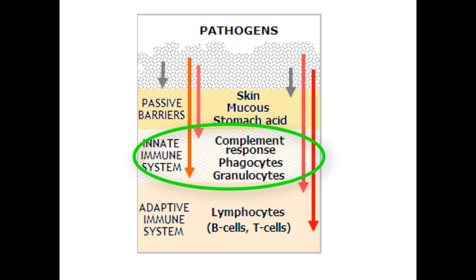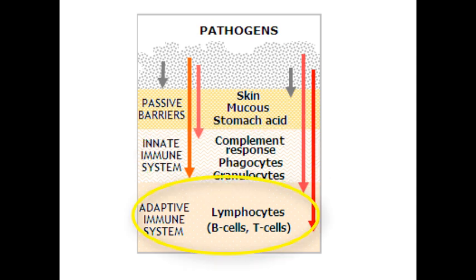Granulocytes are so named because they have secretory vesicles. If pathogens are able to pass the second line of defense, we have a third line of defense in which our adaptive immune system plays the majority of the function. Here we have our lymphocytes, which are our B cells and T cells.